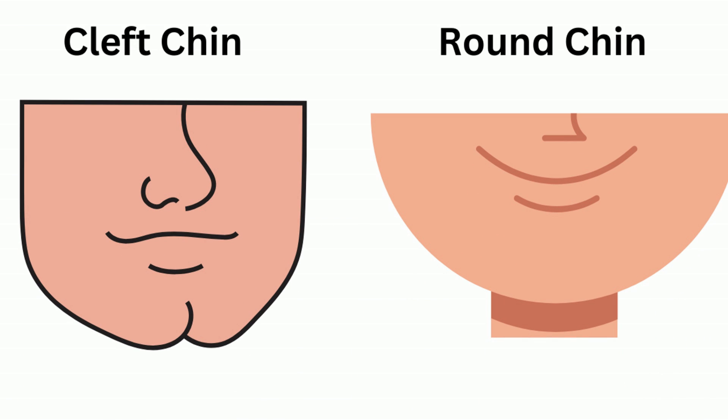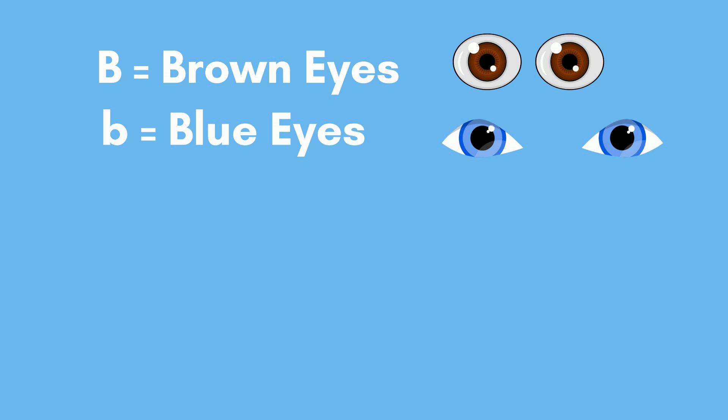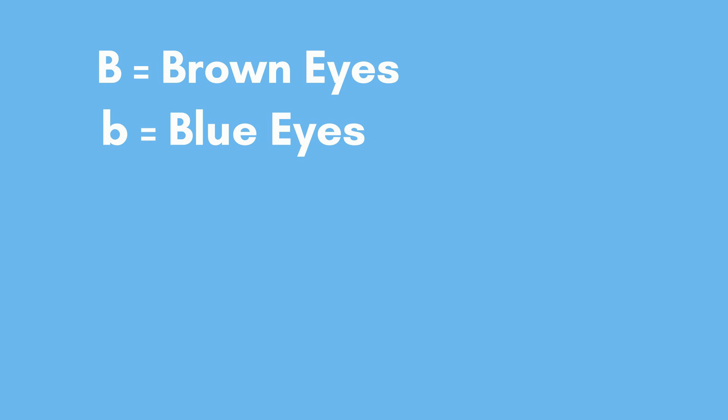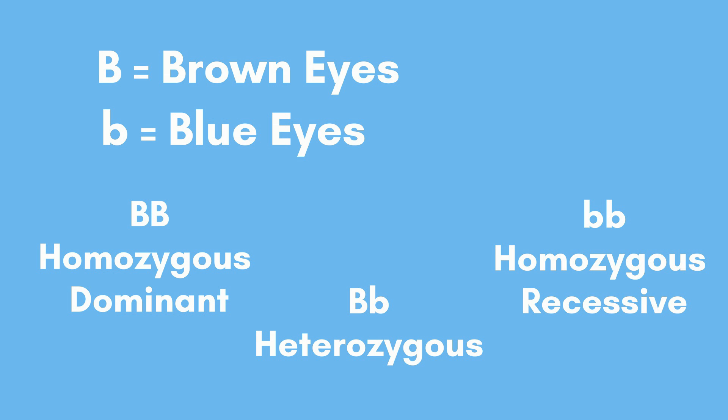For example, let's say capital B refers to brown eyes and lowercase b refers to blue eyes. So there are three genotypes: Big B, Big B — homozygous dominant; Big B, little b — heterozygous; and little b, little b — homozygous recessive.